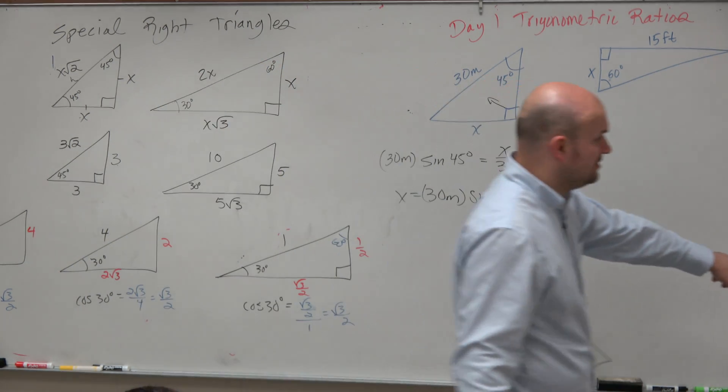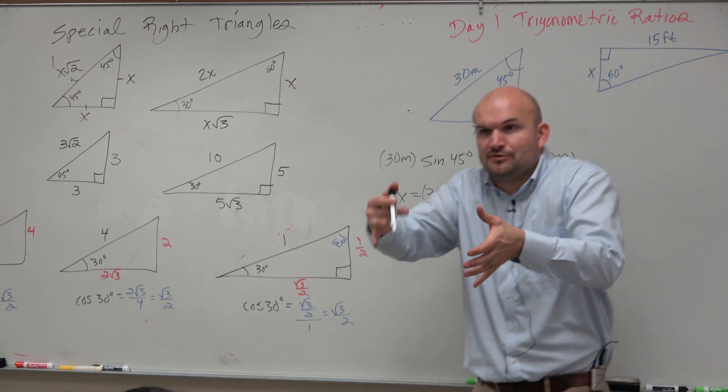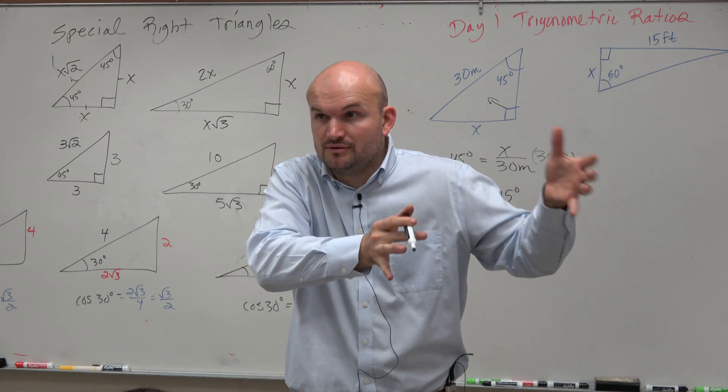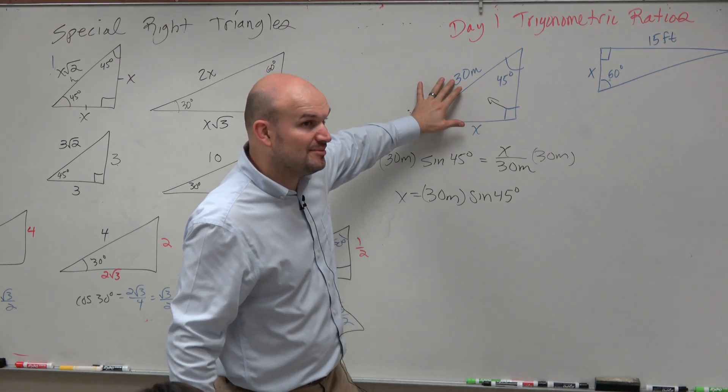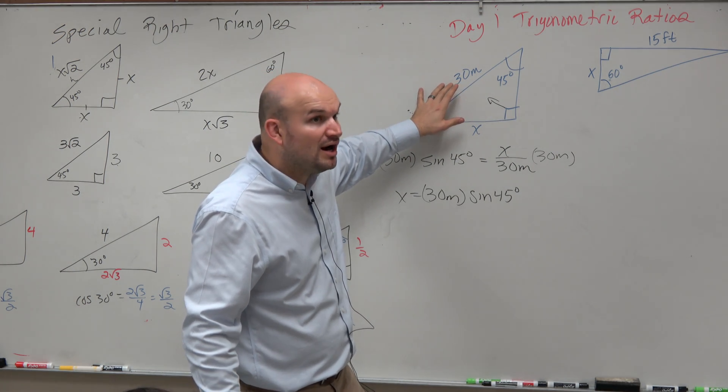Remember how the cosine of 30 degrees was the same? Didn't matter what the side lengths were. It doesn't matter that this is 30 meters. It could be 15 meters, it could be one. It doesn't matter.